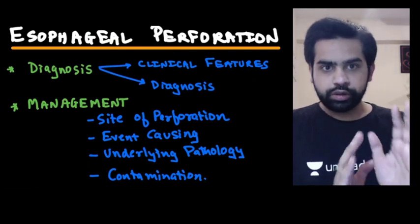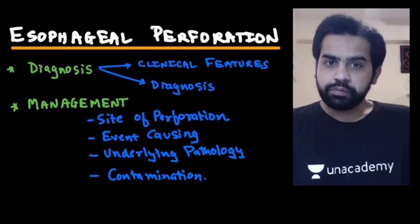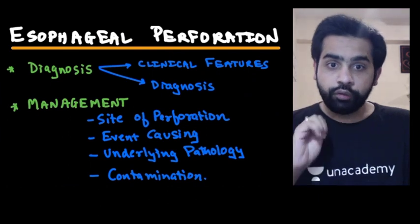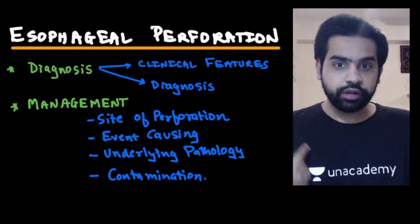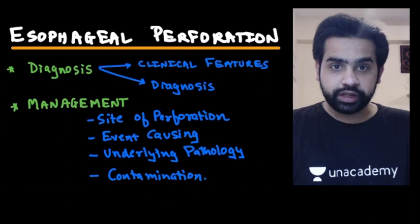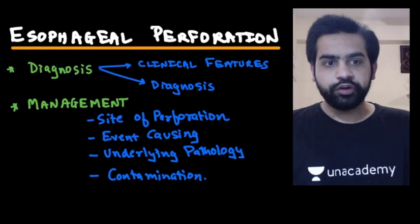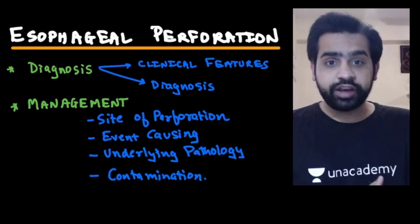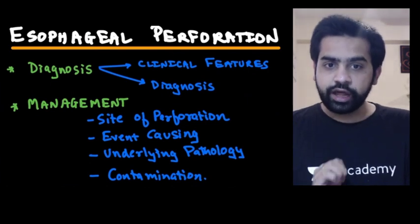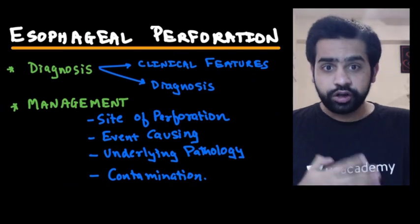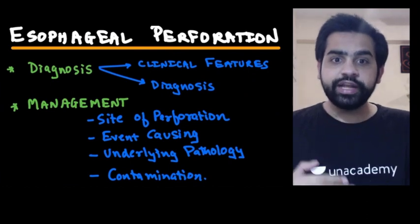Once you have diagnosed esophageal perforation, how do you manage the patient? You must consider four things: the site of perforation — cervical or thoracic esophagus; the event causing it — iatrogenic or spontaneous like Boerhaave syndrome; any underlying pathology such as motility disorder, stricture, or carcinoma; and the degree of contamination in the mediastinum.